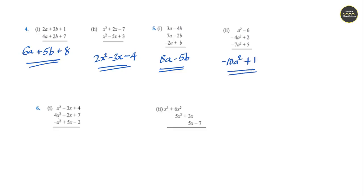x square plus 4x square is 5x square minus x square, giving 4x square. Then minus 3x plus minus 2x minus 5x gives 0x. And 4 plus 7 is 11, minus 2 is plus 9. So the answer can be rewritten as 4x square plus 9.